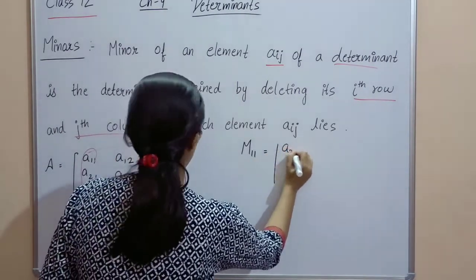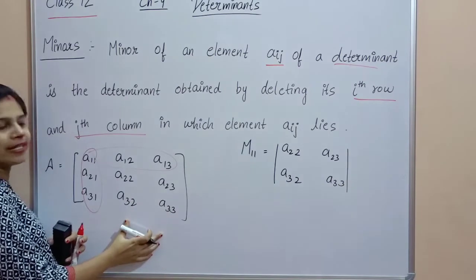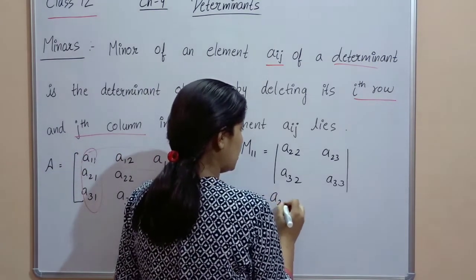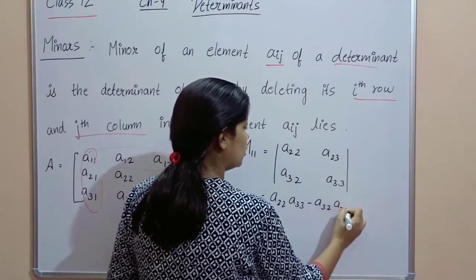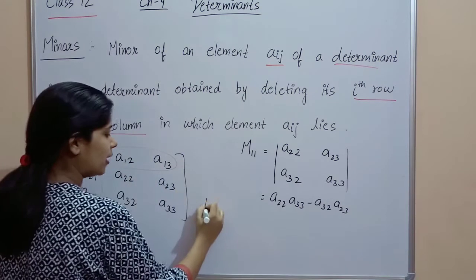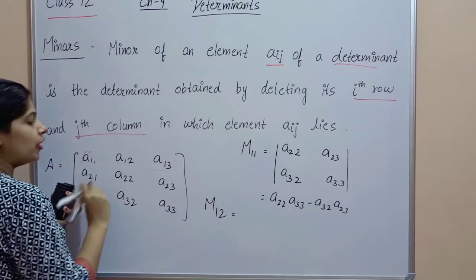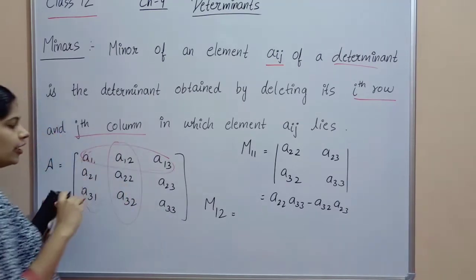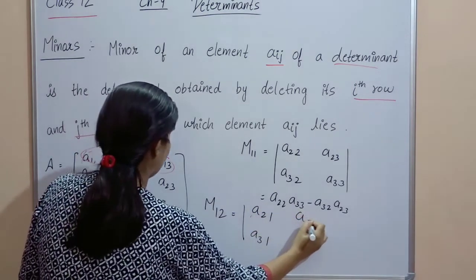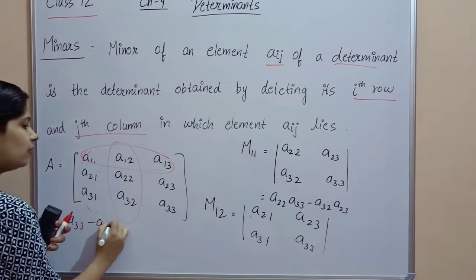The remaining elements after deleting the first row and first column are a22, a32, a23, a33. Their determinant gives M11. For M12, I delete the first row and second column, and the remaining elements are a21, a31, a23, a33. Their determinant is a21·a33 minus a31·a23.